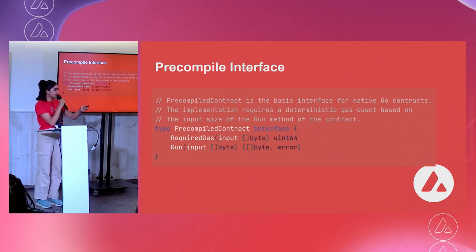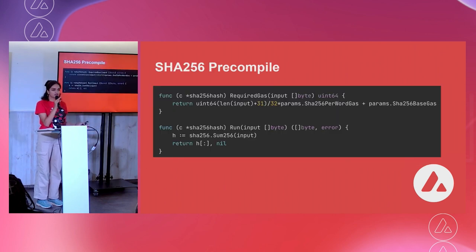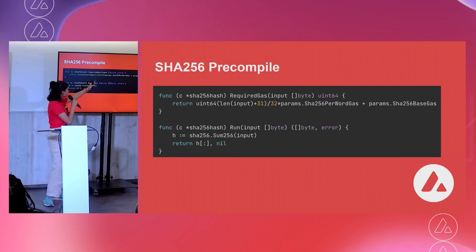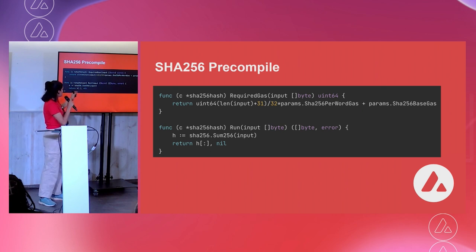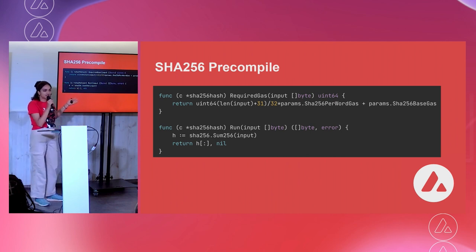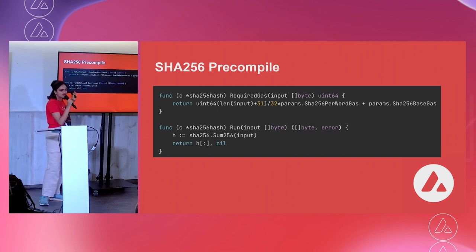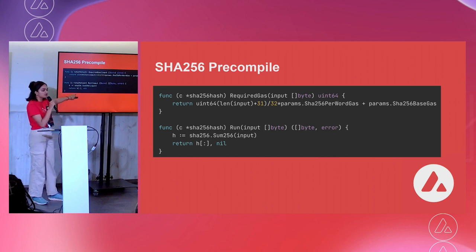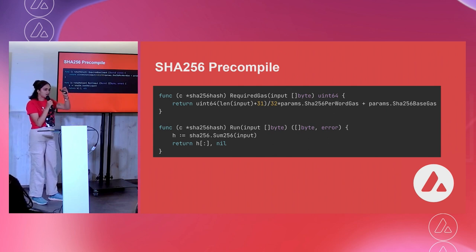Let's look at an example — the SHA-256 precompile. Very simple. Based on the input size, we return some cost. Then based on the input, we use a SHA-256 library in Go and return the answer. This is way faster and cheaper to do in Golang rather than in the EVM. That's the benefit of a precompile — all we do is redirect it to run this whenever someone calls SHA-256.